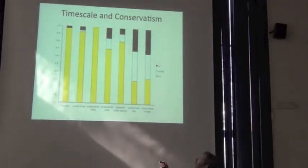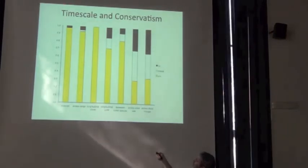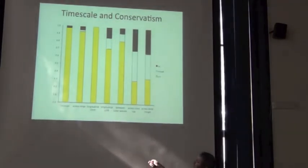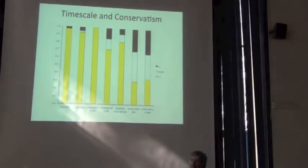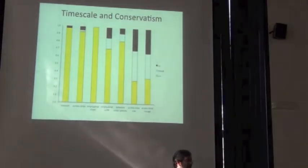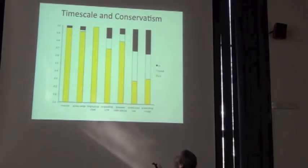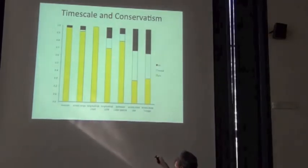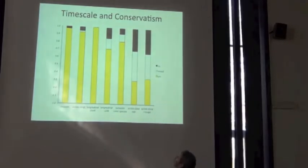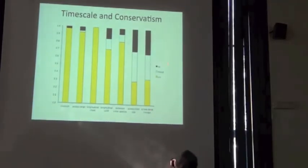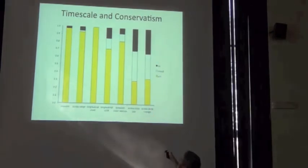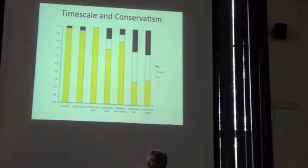And the result's pretty obvious. At short time scales, and this is kind of decades to centuries, we really see very little evidence for ecological niche change. At these middle time scales of tens to hundreds of thousands of years, we see some change, but mostly non-change. And then the deeper we go in time, the more change we see.